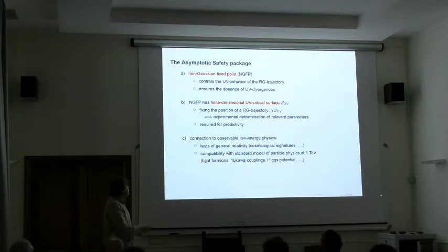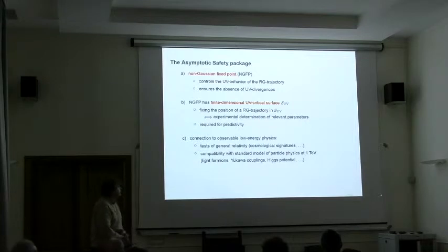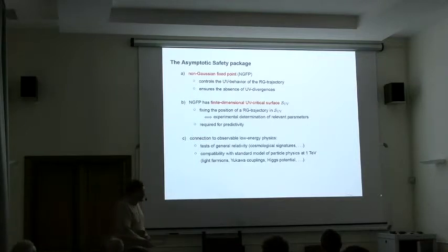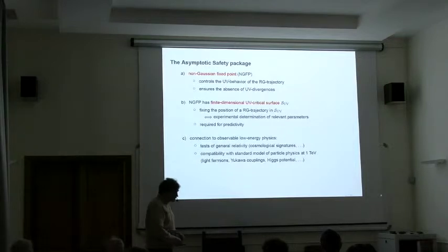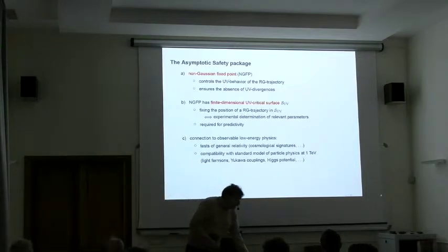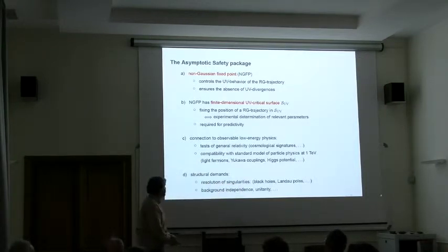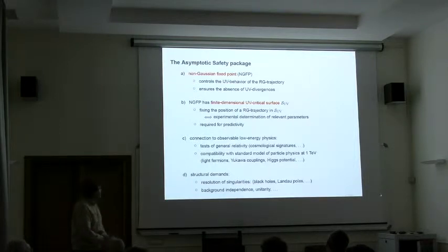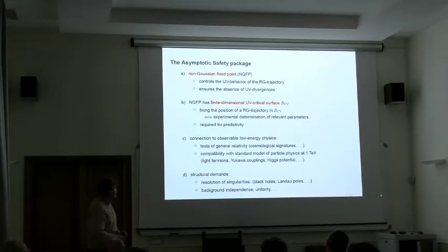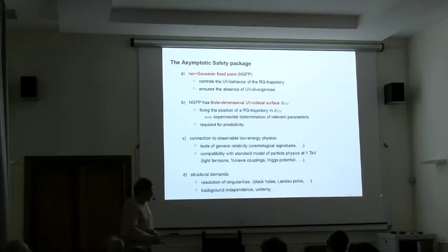We also want the theory to be connected to observable low energy physics. In essence we want to be able to reproduce tests of general relativity on the gravitational side, and we want the theory to be compatible with observations that we made in the matter sector, especially in the standard model. Then finally we also had a heated discussion about this: there could also be some structural demands on unitarity and the shape of the propagator. This is what we discussed already during this workshop.